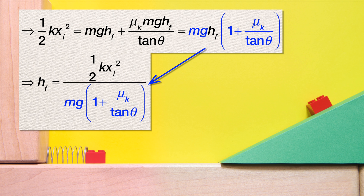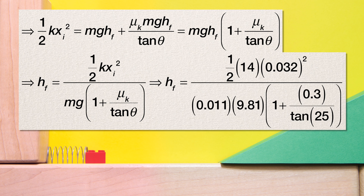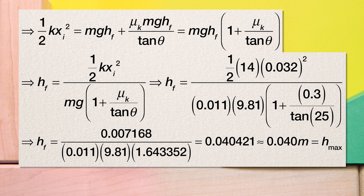Now we can substitute in numbers. The height final equals one half times 14 times 0.032 squared, divided by the quantity 0.011 times 9.81 times the quantity 1 plus 0.3 divided by the tangent of 25 degrees, which works out to be, with two significant digits, 0.040 meters — which is exactly what we got the previous time we did this problem. The maximum height the block slides to is 0.040 meters.